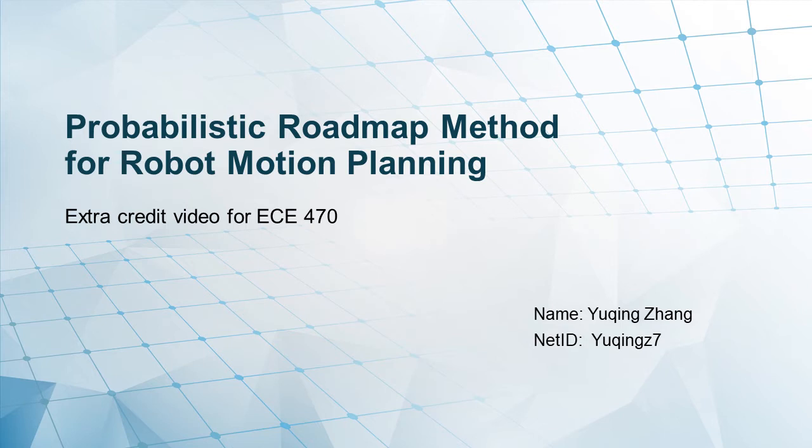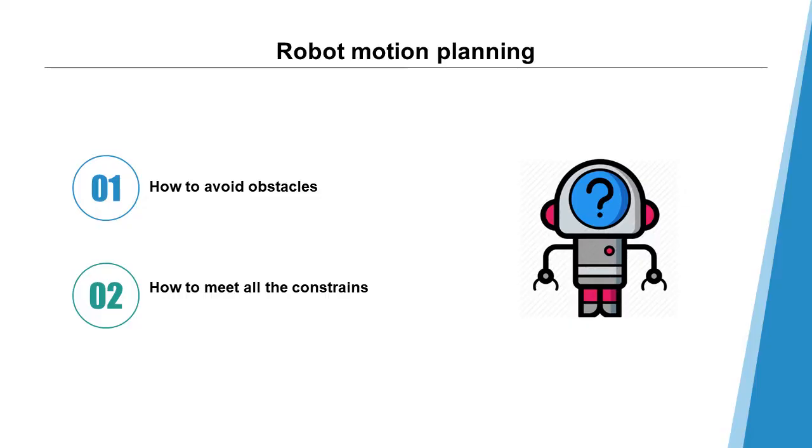Path planning is the basis for various tasks for robots and has always been a research hotspot. It is an important method for robots to avoid obstacles in the configuration space. In this video, I'm going to focus on one type of sampling-based path planning algorithm, the PRM method.